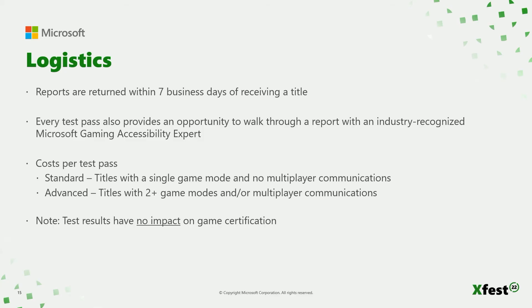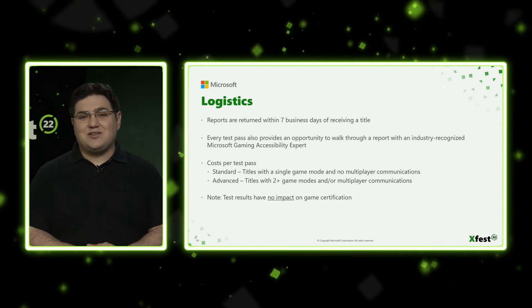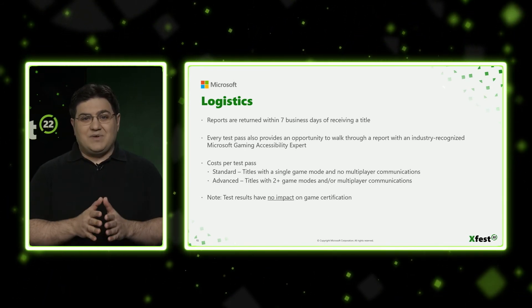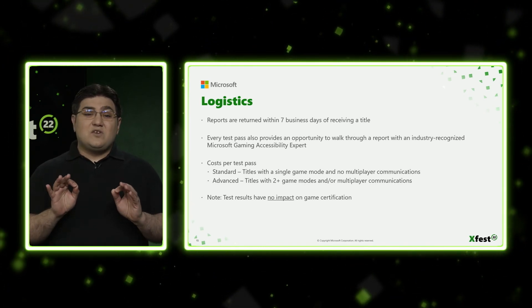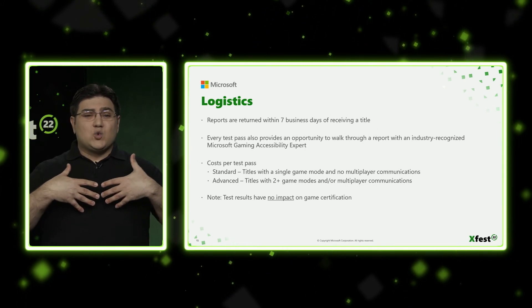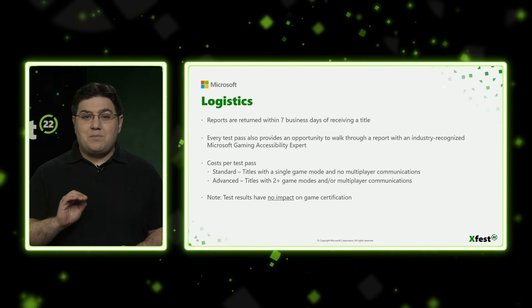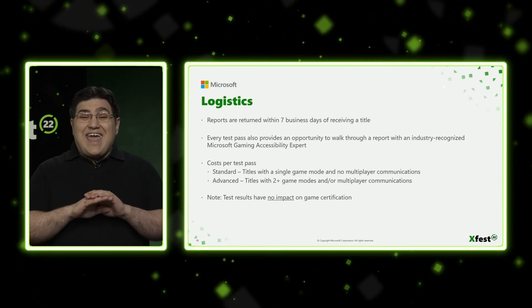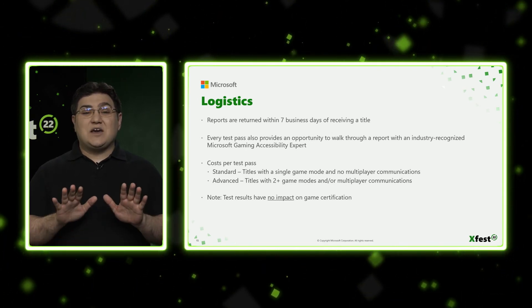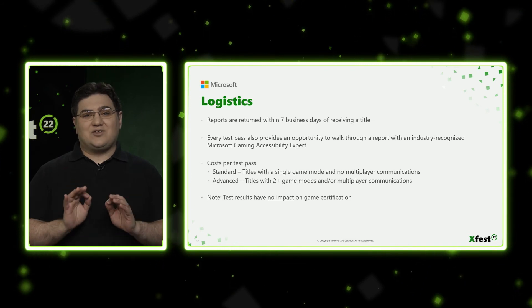With regards to costs, this is an optional program, and in an effort to keep costs as low as possible for developers and publishers, we've broken our test offerings into two categories. Standard testing is for games that have a single game mode and no multiplayer communications. Advanced testing is for games that have multiple game modes and/or multiplayer communications. Regional costs for each type of testing can be obtained by contacting your Microsoft Partner Manager. It's also important to note that the results of this program have absolutely no impact on your product certification status — implementing any feedback or addressing any concerns found in our reports is completely at your discretion and will not affect certification of your title.